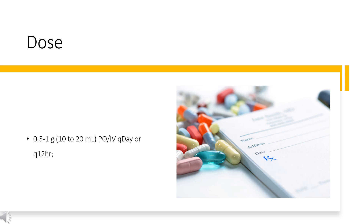Dose for Hypertension: 0.5–1 g (10–20 mL), taken orally, started as a single or divided dose. Increase or decrease dosage based on blood pressure response.